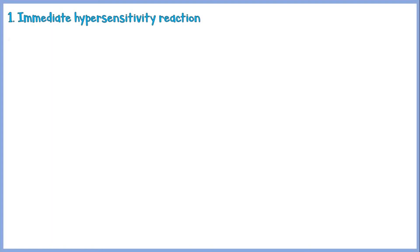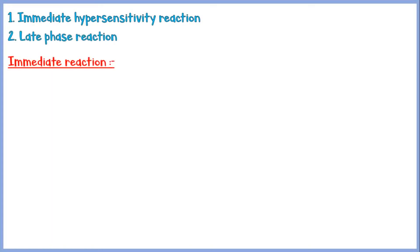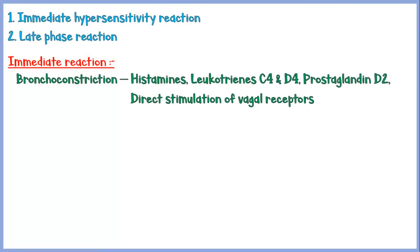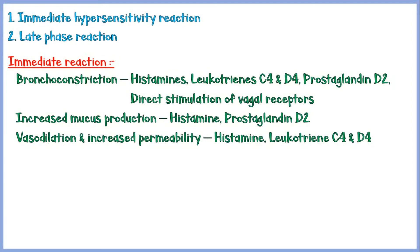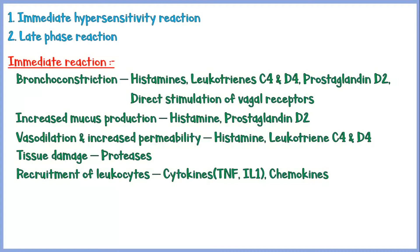These substances induce two types of reactions within the airways: the immediate hypersensitivity reaction and the late-phase reaction. The immediate reaction consists of: bronchoconstriction, mediated by histamines, leukotriene C4 and D4, prostaglandin D2, and direct stimulation of vagal receptors in the airways; increased mucus production, mediated by histamine and prostaglandin D2; vasodilation and increased vascular permeability, mediated by histamine and leukotriene C4 and D4; tissue damage caused by proteases; and recruitment of leukocytes, mediated by cytokines like tumor necrosis factor and interleukin-1, and chemokines.